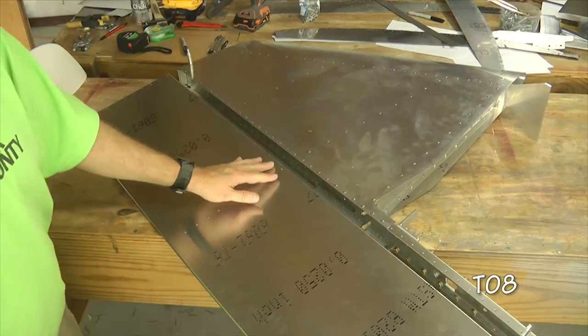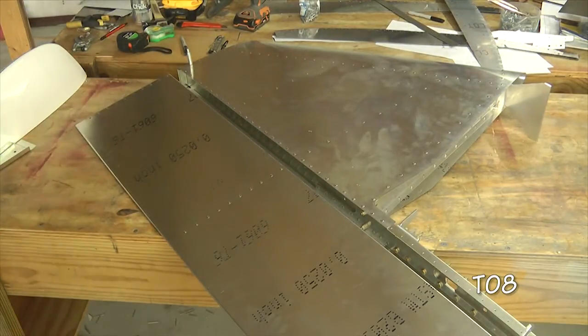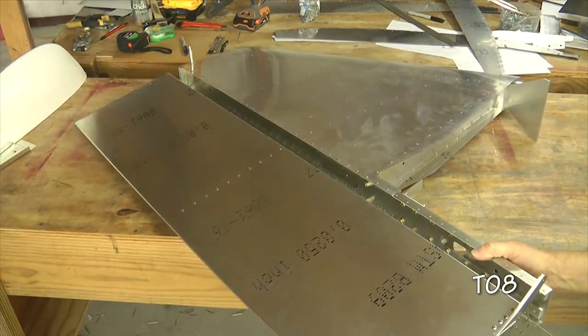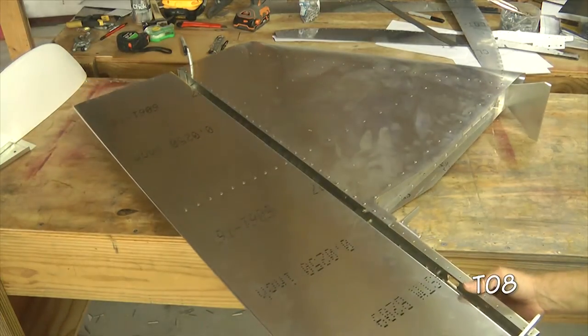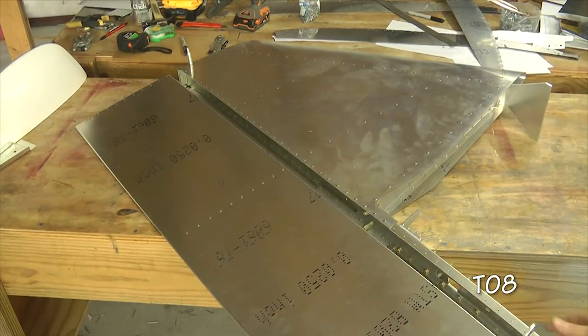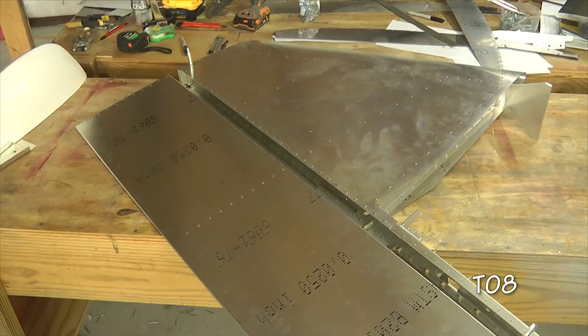Hinge lined up. We'll slip the pin in from the bottom. Add it to the top. Now we'll take a look at the very top where we're going to install the tip and see how our alignment looks up there.